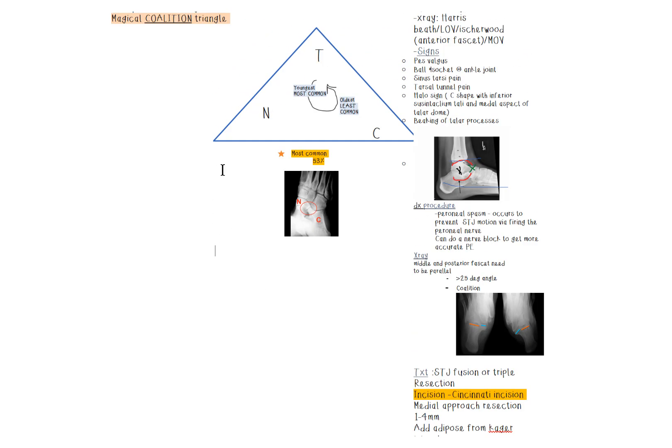Let's get right into the navicular-calcaneal coalition. This one is the most common one found. It's found in the age group between 8 to 12 years, again in boys mainly, and it's also one of them that's commonly found bilateral, so on both feet. The x-ray imaging I want you to get is the medial oblique view, also called the lateral oblique projection. The sign for this one is called the anteater sign.